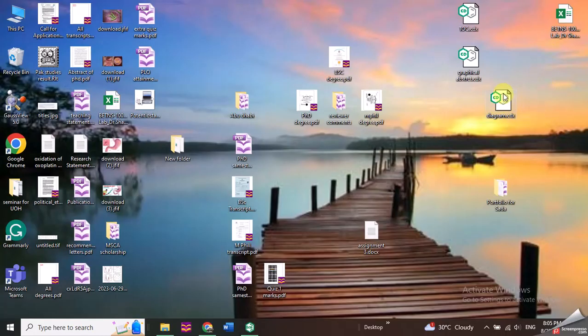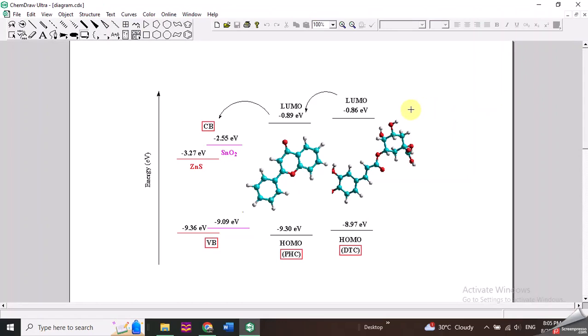Now let me show you one of the diagrams that I have drawn using ChemDraw. This is kind of an energy level diagram. Here you can see these structures I have taken from another software, from HyperChem, and I have copy-pasted them here. Then I have used certain options from these arrows and other drawing options, and I have drawn this structure for the paper.